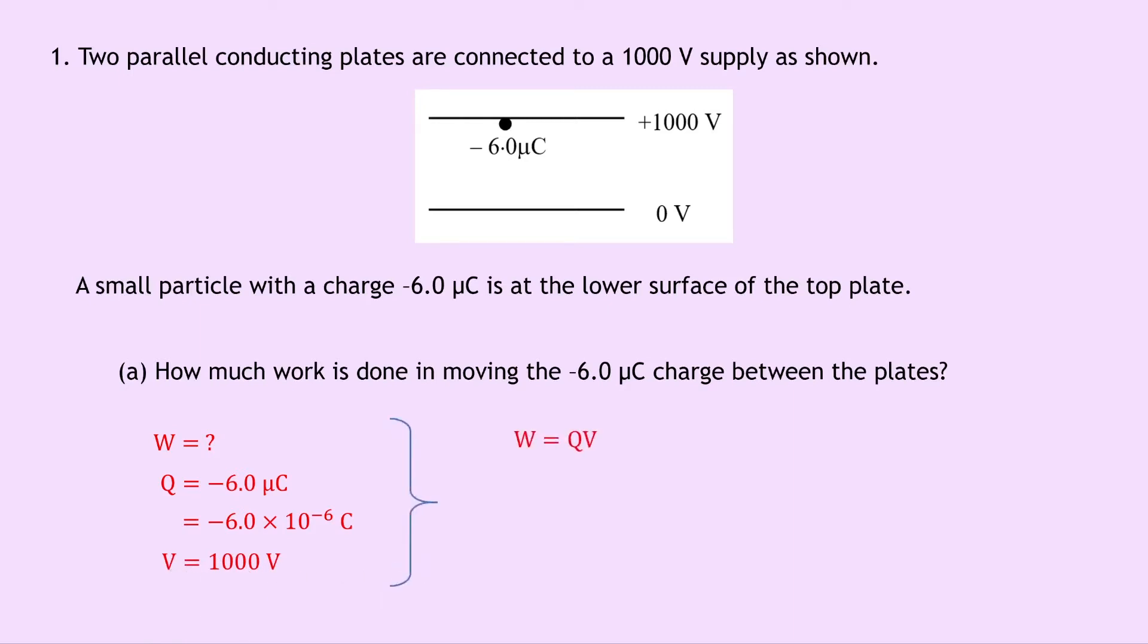So writing down our equation we have W equals QV. Substituting in the numbers gives us minus 6 times 10 to the minus 6 times 1000, which gives a final answer of minus 6 times 10 to the minus 3 joules.